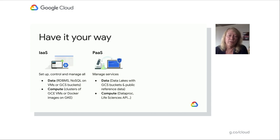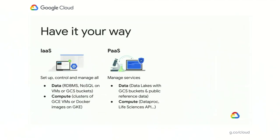There are other researchers who would prefer to work at the platform level. They would rather run their analysis over managed services and let Google handle more of the underlying infrastructure. For data, this looks like data lakes running on Google Cloud Storage buckets and use of public reference genomics data. At the compute layer, this often manifests by using services such as Dataproc or the Google Life Sciences API, which efficiently handles orchestration of groups of virtual machines, allowing researchers to dynamically spin up and spin down compute resources.